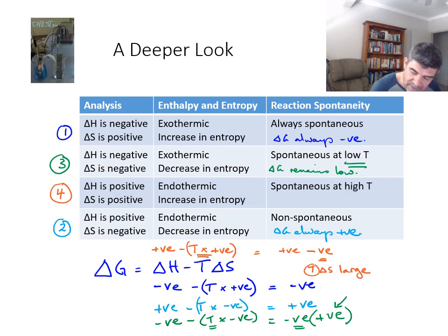And one of the ways for that to happen is to ensure that the temperature is very high. So for the delta G to be negative, we have to have the T delta S being greater in magnitude than the delta H value.